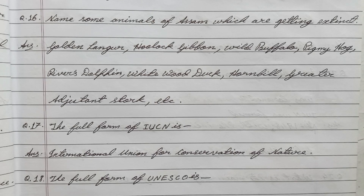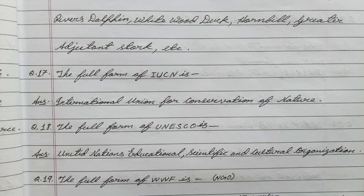Question number sixteen: Name some animals of Assam which are getting extinct. Answer: Golden langur, hoolock gibbon, wild buffalo, pygmy hog, river dolphin, white-winged wood duck, hornbill, greater adjutant stork, etc.